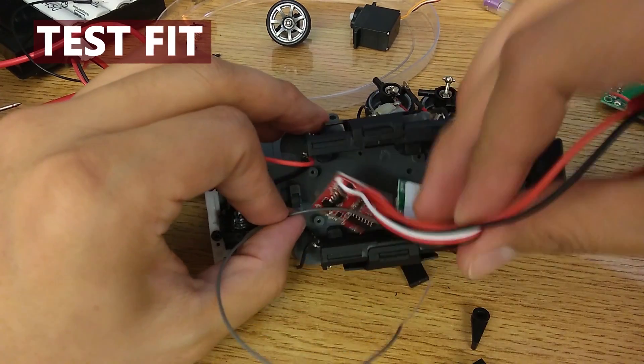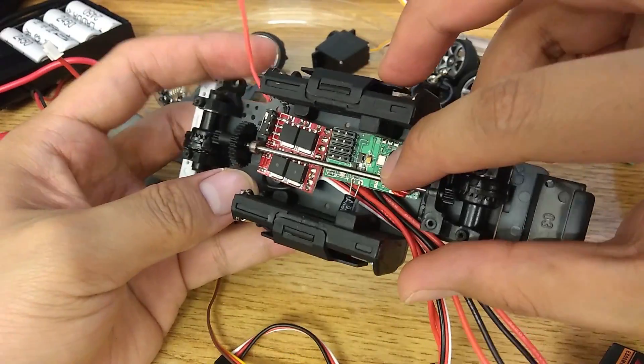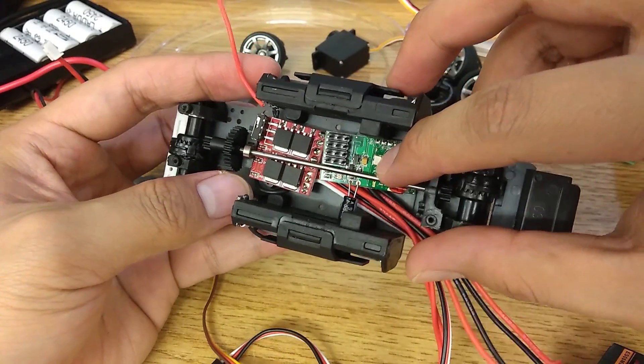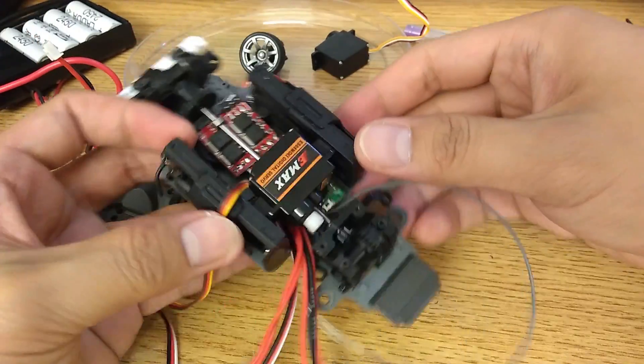Now I have to figure out where to put these boards on the chassis. This is how they are going to go in. ESC at the back and receiver at the front. This way they won't interfere with the centre shaft, servo and motor tray.